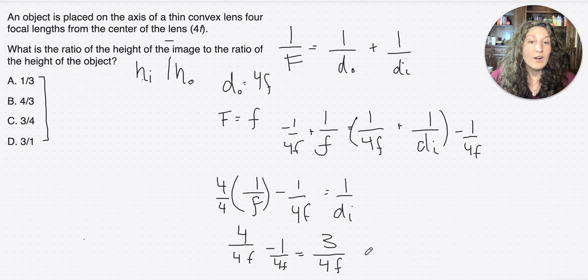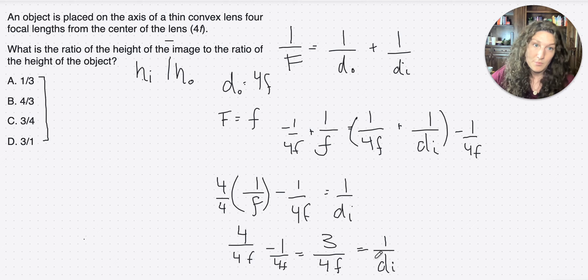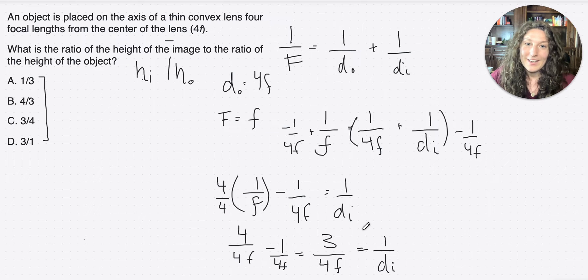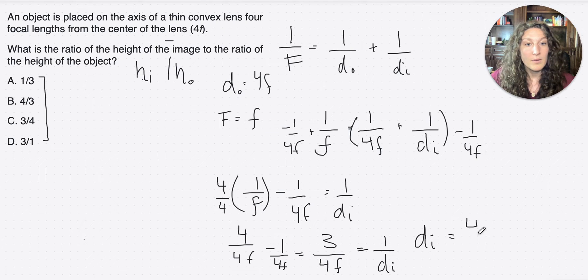3 over 4f equals, not di, 1 over di. Okay, it's very important when you're using fractions, reciprocals, reciprocal math, to make sure that you remember to flip the reciprocal at the end, right? 3 over 4f equals 1 over di, which means if we want di, we just need to flip the fraction, and it will become 4 thirds over f, or 4 thirds f, sorry.